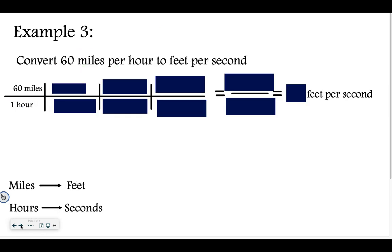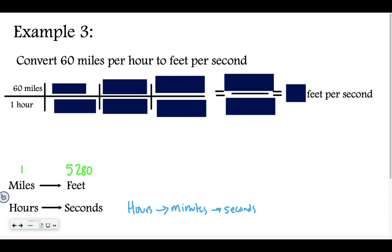I have one more example. This time we're converting from 60 miles per hour to feet per second — miles to feet and hours to seconds. One mile equals 5,280 feet. That might be a number you have to look up, but you should memorize it because we're going to use it a lot over the next two years and in high school too. Going from hours to seconds, I would go through minutes as an intermediate step: hours to minutes, then minutes to seconds.